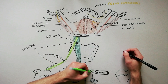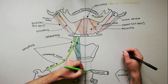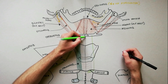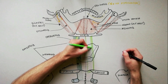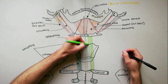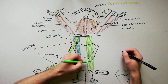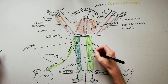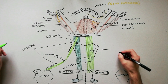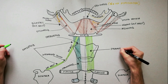The last infrahyoid muscle to be indicated is the sternohyoid. This muscle stretches from the base of the neck to the hyoid bone and is located anterior to the sternothyroid and thyrohyoid muscles. Its origin is on the posterior surface of the manubrium and adjoining part of the clavicle. The fibers go upwards to be inserted on the medial part of the lower border of the hyoid bone.